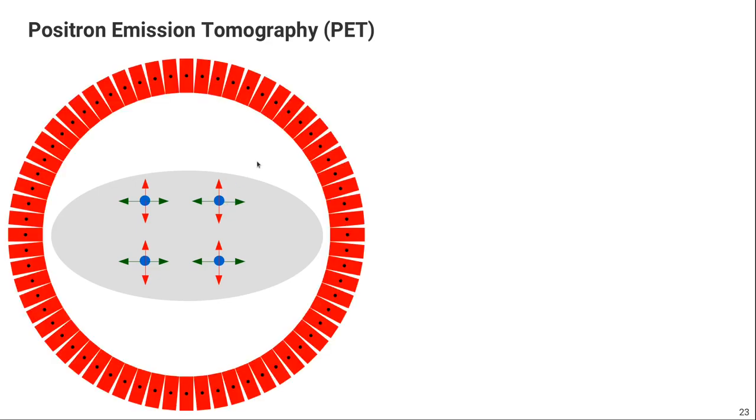So if you now actually put a complete ring of small detectors around our patient, if you look at the individual detectors, an individual detector still sees photons from all the directions. If you would focus on that detector, that will see photons from that emission point, but also photons from that emission point, and also photons from that emission point.